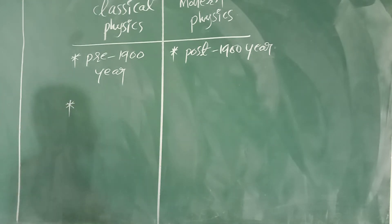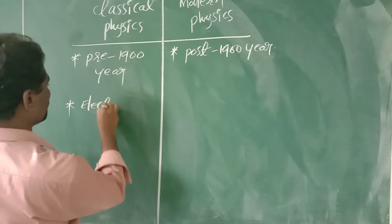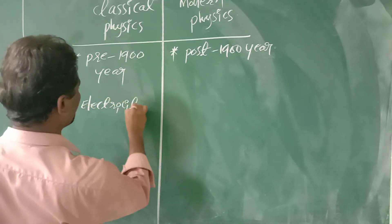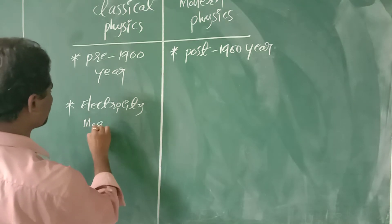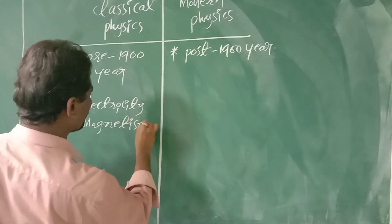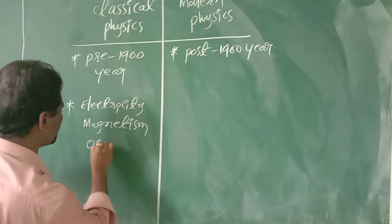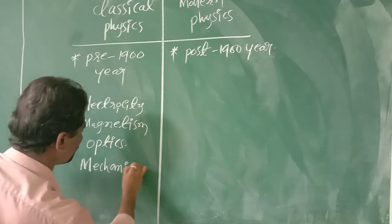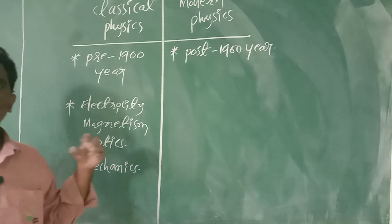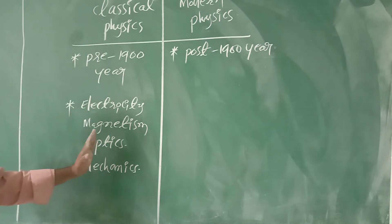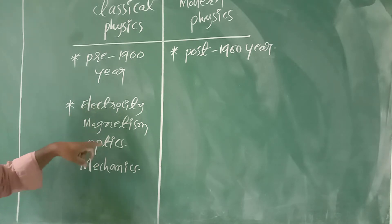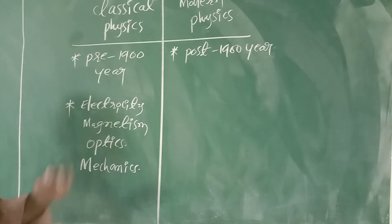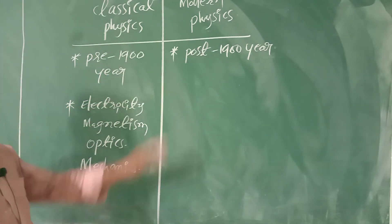What are the branches of classical physics? Classical physics includes electricity, magnetism, optics, and mechanics. All these topics come under classical physics, which was invented before 1900 — around 1600, 1700, 1800, up to 1850.